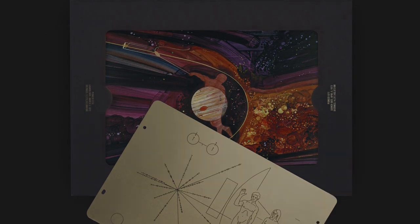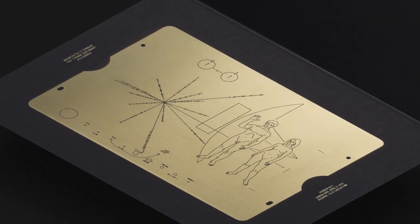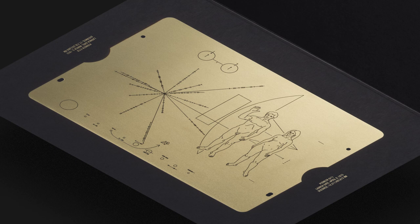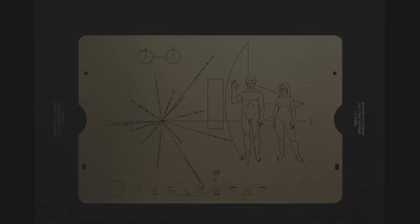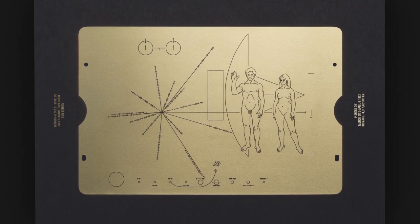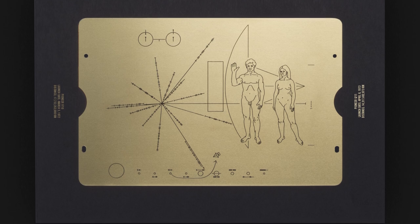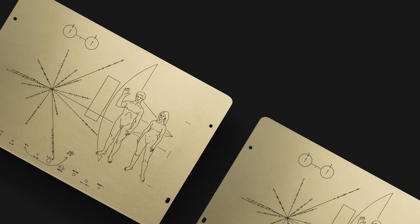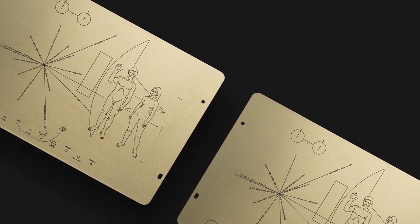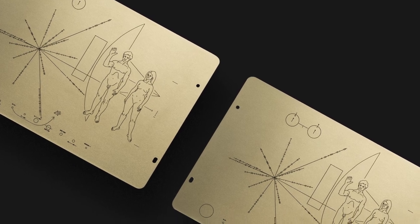The original plaque aboard Pioneer 10 has traveled 18 billion kilometers towards the constellation Taurus. The second plaque aboard Pioneer 11 has traveled 14 billion kilometers in the opposite direction. And lastly, there is one aboard the Pioneer prototype that is on exhibit at the Smithsonian National Air and Space Museum.